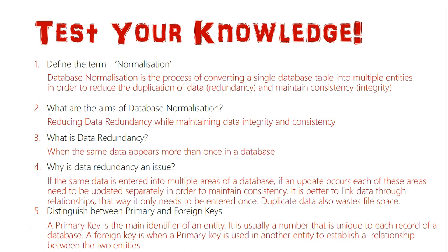A foreign key is when a primary key is used in another entity to establish a relationship between two entities. Every entity in a relational database has a primary key — usually some form of ID. That ID is then used as a foreign key, which is an attribute in another entity, to establish a relationship between the two entities. Both primary and foreign keys are needed to establish these relationships.